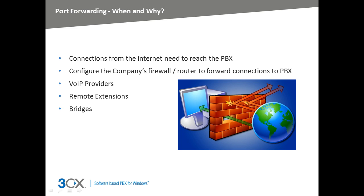Before we delve into the details, let's first take a look at when port forwarding is required. 3CX phone system is installed within the local area network of the organisation. The LAN is generally protected from the internet using a firewall, so it is the firewall that decides which connections from the internet are allowed through. The firewall will often act as a router between the internet and the LAN, so it knows where connections need to be routed.